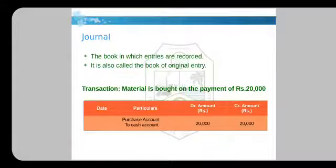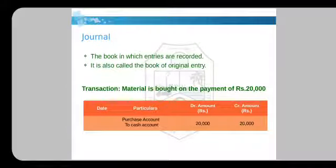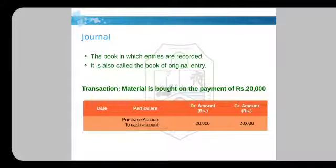Journal is the book in which entries are recorded — a book in which all transaction entries are written. It is also called the book of original entry. For example, if a material is brought for a payment of rupees 20,000, the date is written, the particular is 'Purchase account to Cash account,' the debited amount is 20,000 rupees, and the credited amount is 20,000 rupees.